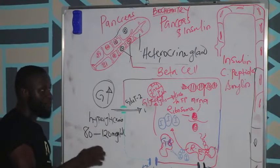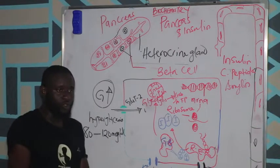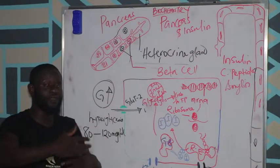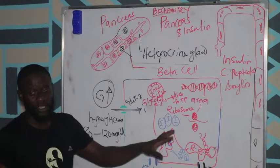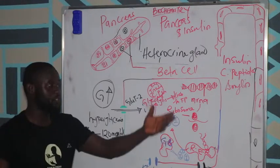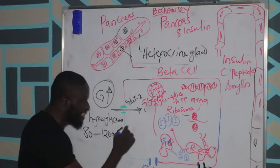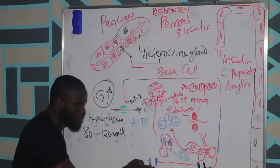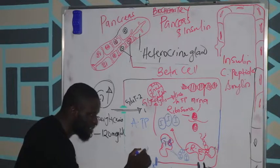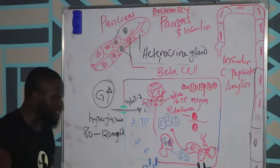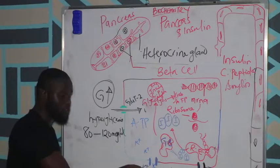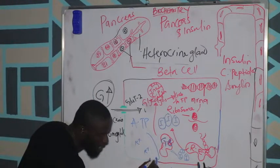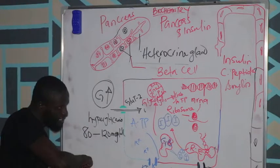Glucose comes into the beta cell and undergoes glycolysis, which produces pyruvate, which eventually becomes acetyl-CoA that is sent to the mitochondria for modification to produce NADH and FADH₂. These undergo oxidative phosphorylation to give you ATP — ATP is the end game, we need this ATP. This is the potassium channel, which allows potassium to come into the cell.